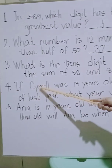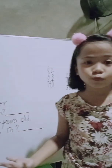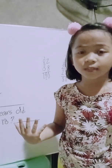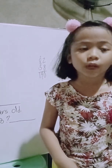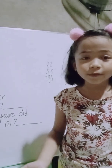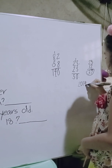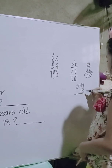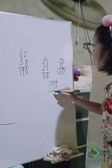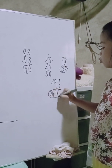Number 4. If Cyril was 13 years old in December of last year, what year was he born? This year is 2020, so last year was 2019. We need to subtract 2019 minus 13, because 13 is Cyril's age. 9 minus 3 is 6, 1 minus 1 is 0, bring down 0 and 2. That's why the answer is 2006.